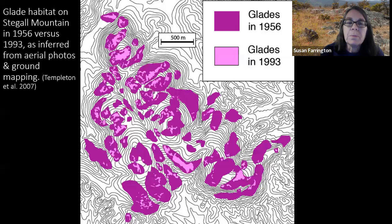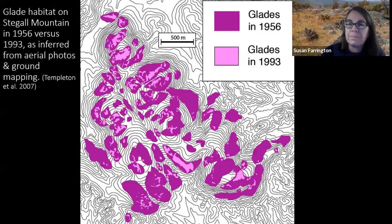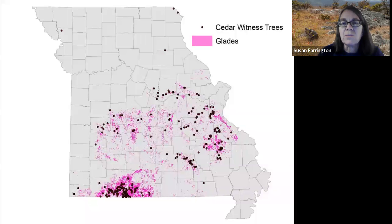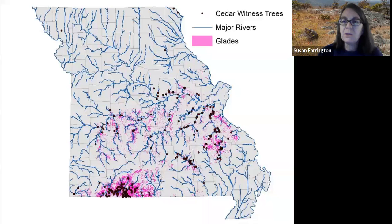Everything that you see in dark purple is glade habitat that was lost to cedar and other tree species by 1993. Overall, about 60% of the glade area had been lost relative to 1956, with all glades being reduced in size and some glades disappearing entirely. It wasn't always the case that cedars were everywhere. When land surveyors traveled Missouri in the early 1800s, they marked witness trees along survey lines noting the species. The dark points are cedar witness trees from the 1820s and the pink areas are glades. Until you add the major rivers to the map, you can see that the cedars mostly follow the rivers, where they have lived for many centuries on our steep river bluffs that can't be reached by fire.